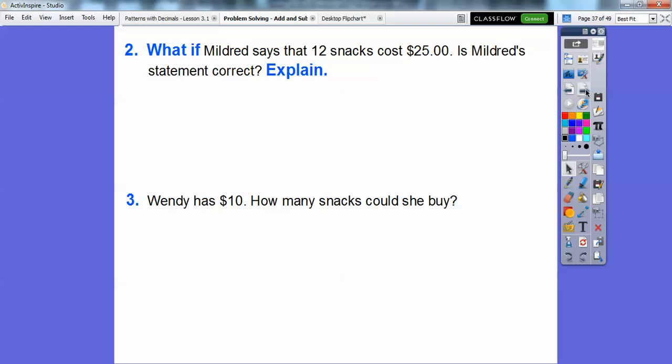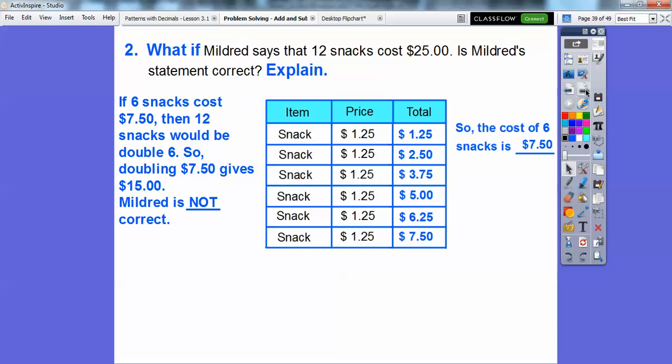What if Mildred said that 12 snacks cost $25? Is this statement correct and explained? Going back to this right here, if six snacks cost $7.50, then 12 snacks would be double six. So if we doubled $7.50, that would be $15.00. So Mildred says that 12 snacks cost $25.00. So she is not correct.